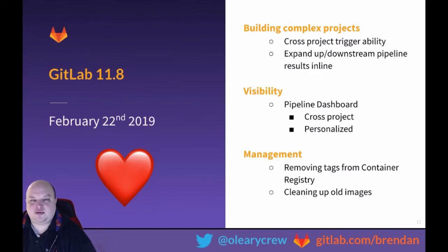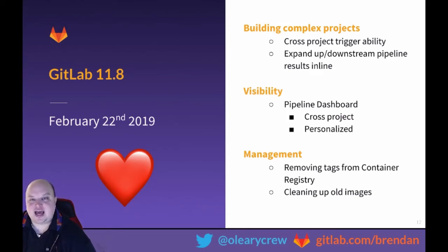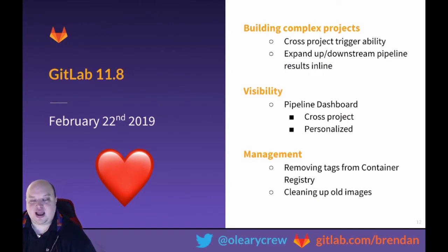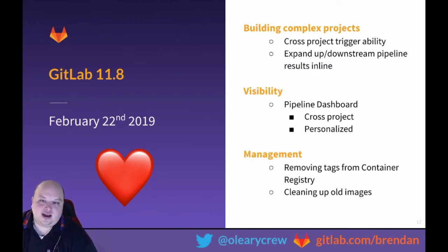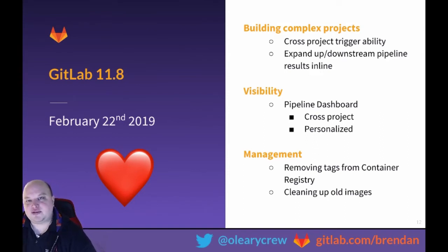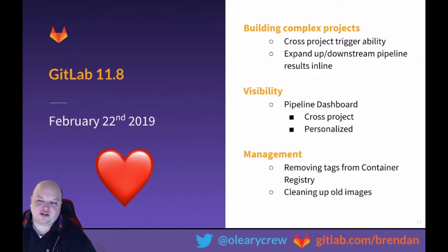Another way we're increasing visibility is a pipeline dashboard — a personal dashboard where you can add the projects you care about and see the status of pipelines, what's failing, what's working, and what's been deployed. We think this will be really helpful for teams that want a cross-project view of their pipelines or want to display those on a board in the team's workspace. On the management side, we're also adding tools for system administrators to remove tags from the container registry and clean up old images.